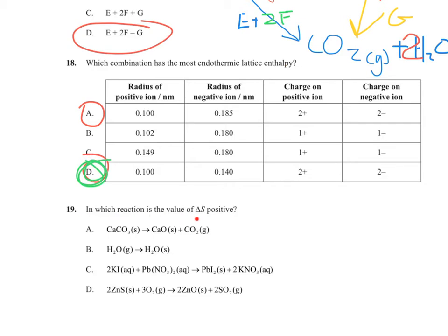Question 19 asks in which reaction is ΔS positive. Entropy increases when you get more particles or more disordered states. The thermal decomposition reaction produces gas from a solid, giving more chaos — positive entropy change. The reaction going from gas to solid is a decrease in entropy. The aqueous reaction forming fewer moles and a solid is also a decrease. The reaction combining free gases into two gases also decreases entropy. Only the thermal decomposition has a positive entropy change.